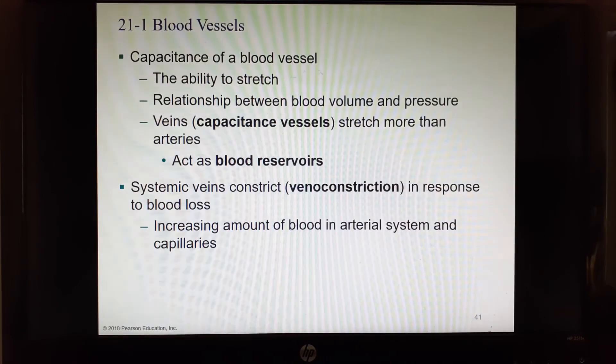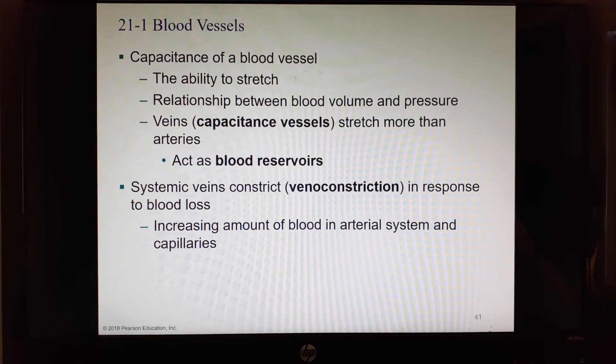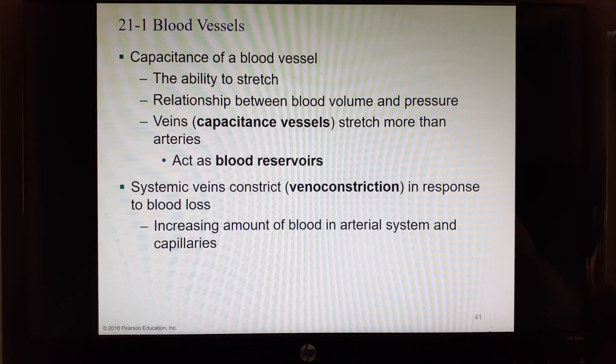We talked about over-stretching a vein and you can get varicose veins. What about your other vessels? Can they be over-stretched? We look at their ability to stretch and recoil as their capacitance. There is a relationship between blood volume and pressure, and veins, which are capacitance vessels because they lack most of the elastic tissues, stretch more than arteries. This is where we keep our blood most of the time in these larger capacitance vessels. Systemic veins constrict in response to blood loss, increasing amounts of blood in the arterial system and capillaries if we squeeze down on the veins.